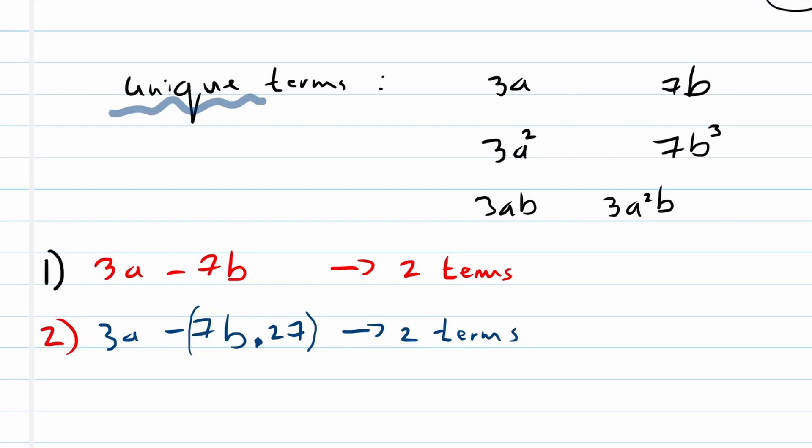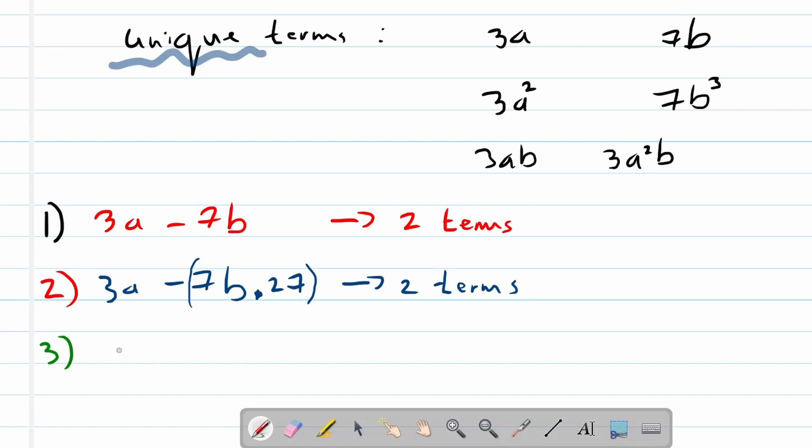Okay, then let's do example 3. Example 3. Let's say 3a minus 7b bracket times 27.